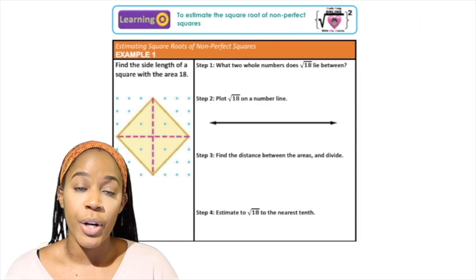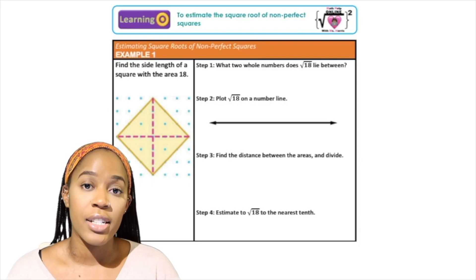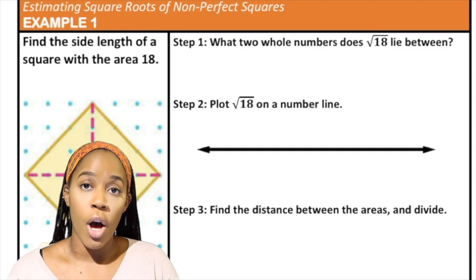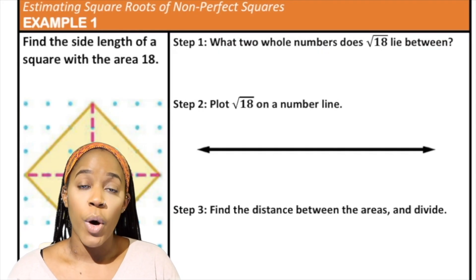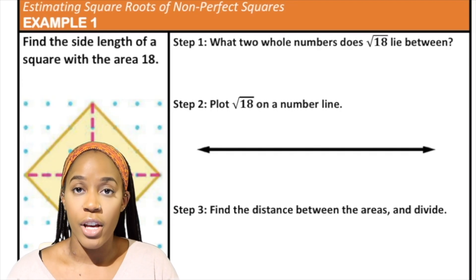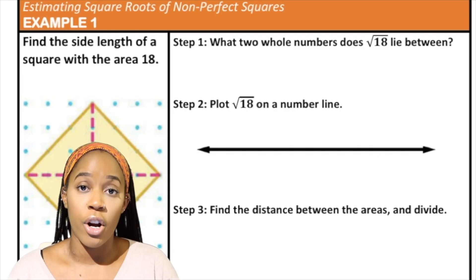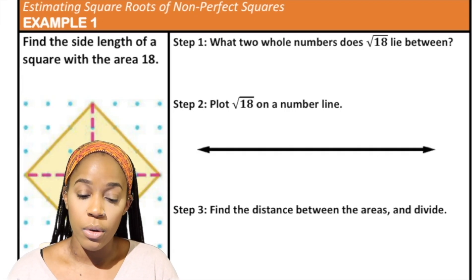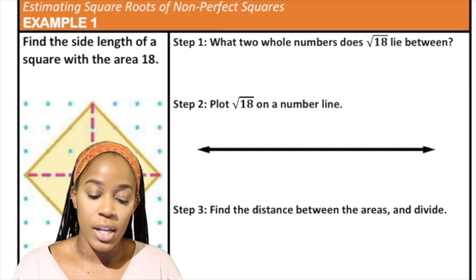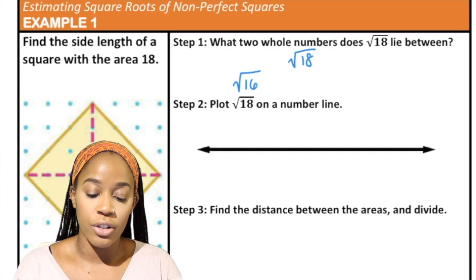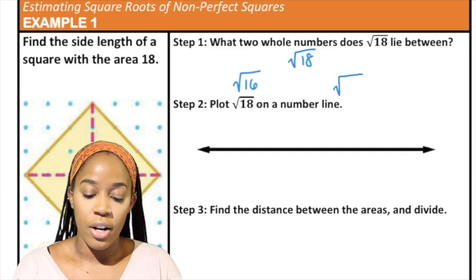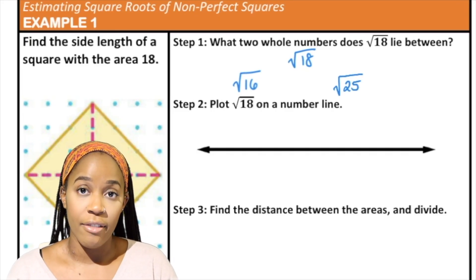For our first example we're going to look at a square that has an area of 18 units. The first thing we want to find is what two whole numbers the square root of 18 — or radical 18 — lies between. If we look back at our square root chart, or think back to the perfect squares we know, we know that radical 18 is going to be between radical 16 and radical 25.